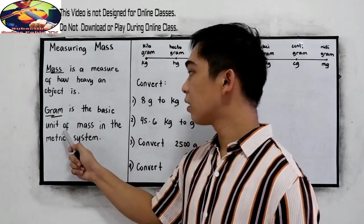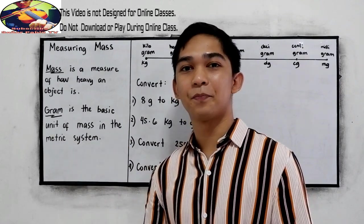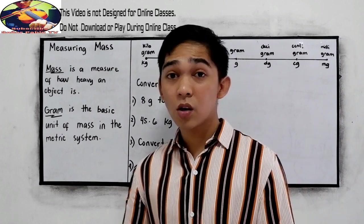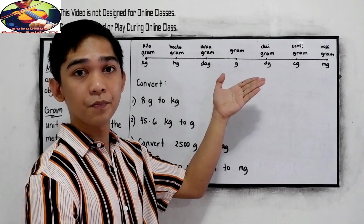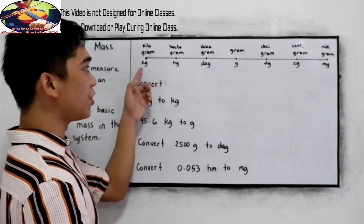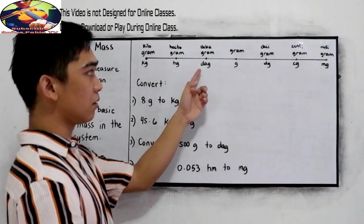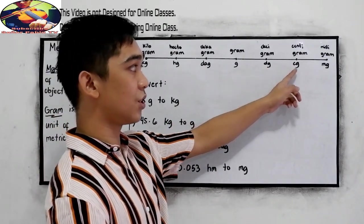We also have our conversion table here. We have Kg, Hg, Dag, G, Dg, Cg, and Mg.